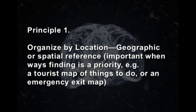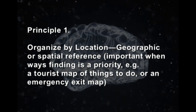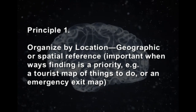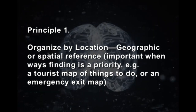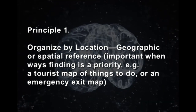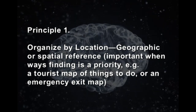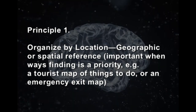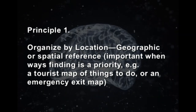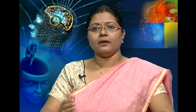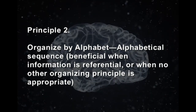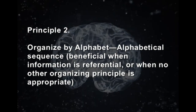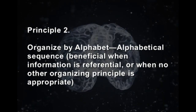The first principle is location — geographic or spatial reference. This skill is important when you need to find your way or prioritize on a map where to go and how to get to a new place, or to find the exact exit map of a shopping complex. The second principle is alphabets — alphabetical sequence. It is beneficial when information is referential or when no other organizing principle is appropriate.